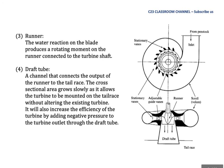Number three: Runner. The water reaction on the blade produces a rotating moment on the runner connected to the turbine shaft. In the Francis Turbine, the blade here is known as the runner. However, in a centrifugal pump, the blade is known as the impeller.